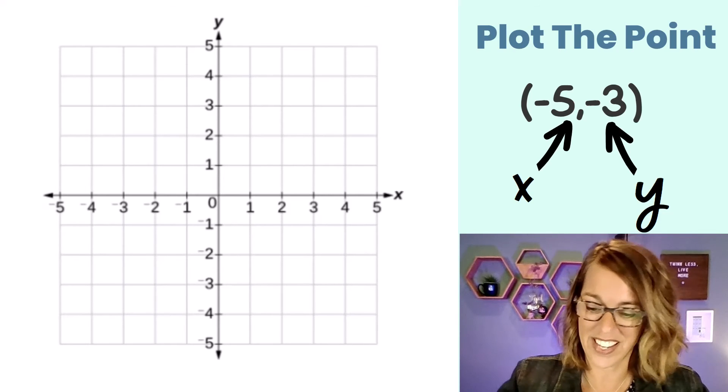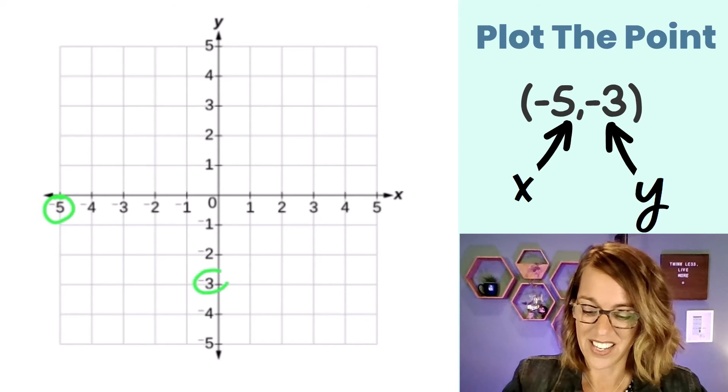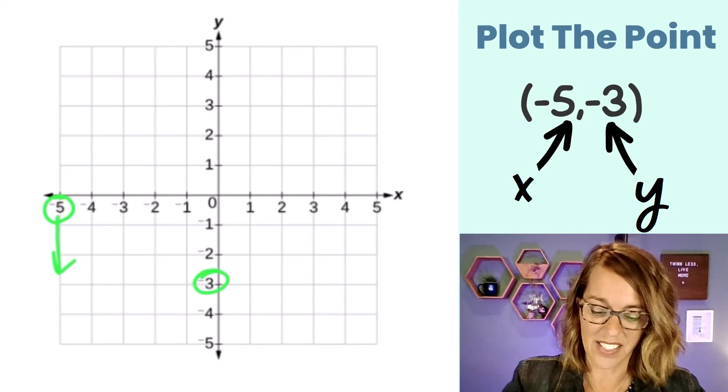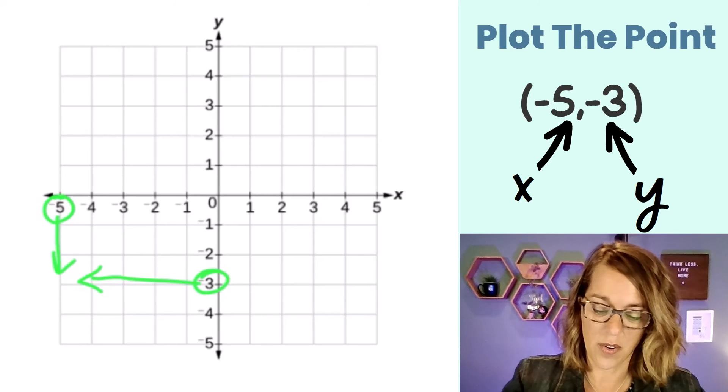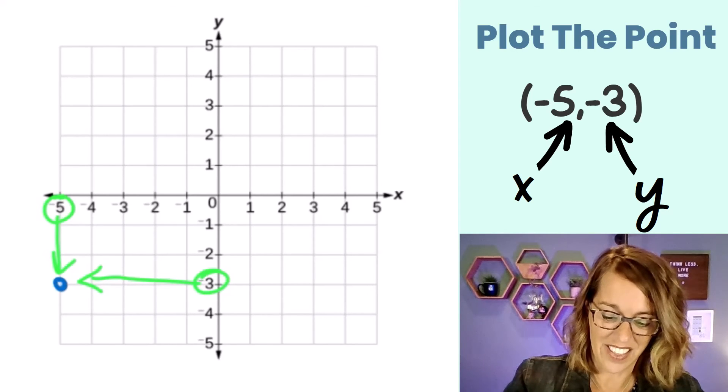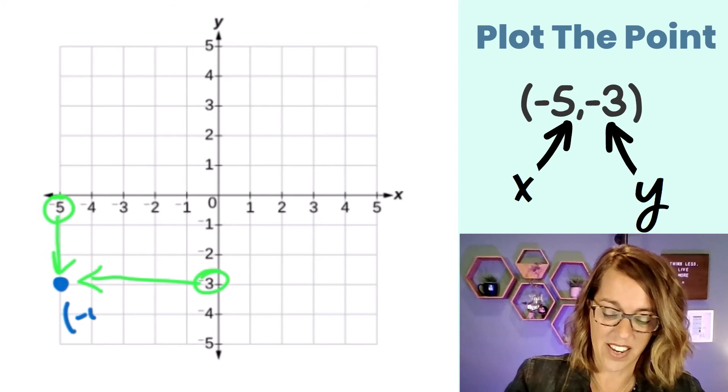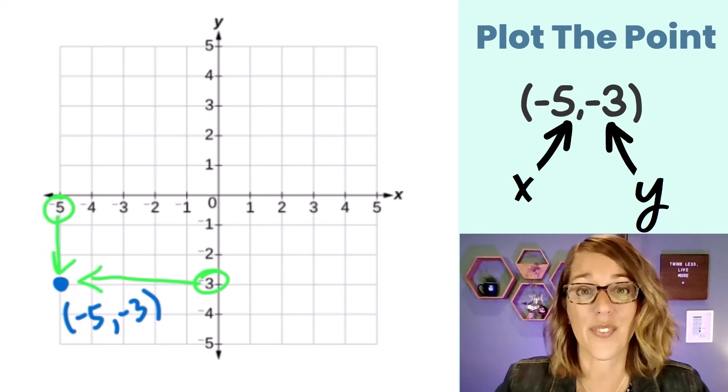So I'm going to start by finding -5 on my X-axis and -3 on my Y-axis. These two are going to line up at this point right here, and I'll label it (-5,-3).